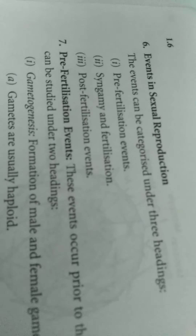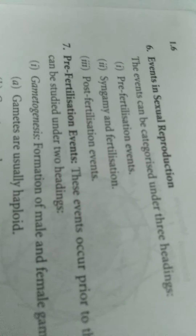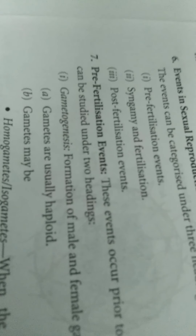Events of sexual reproduction are divided into three events: one is pre-fertilization event, syngamy or fertilization, and post-fertilization events. Pre-fertilization events are divided into two following parts: gamete genesis and gamete transfer.